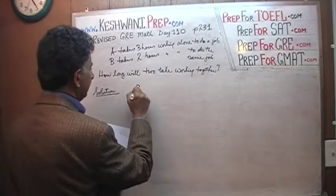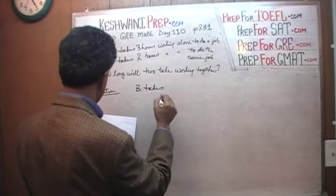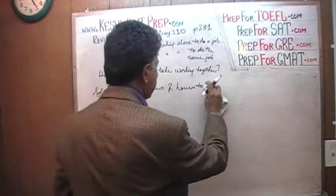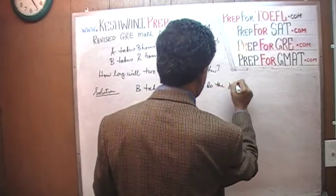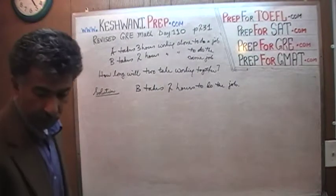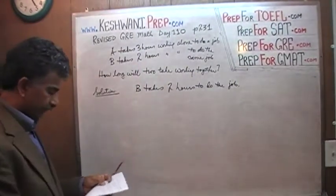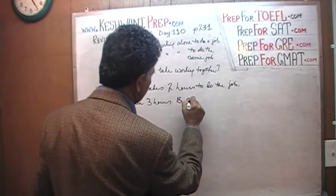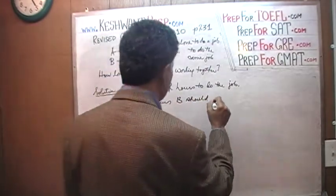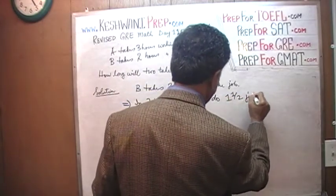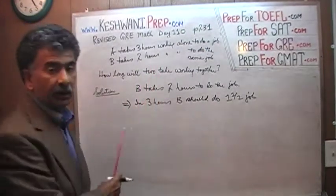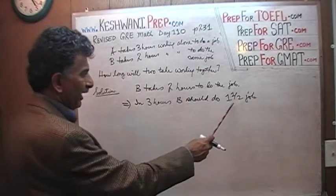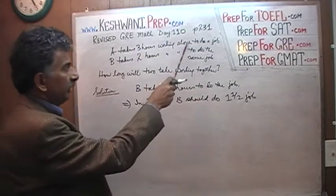We know that B takes two hours to do the job. That implies that in three hours, B should do one and a half jobs. Because it takes two hours to do a job, in another one hour it can do another half a job — whatever the assignment is, it can do one and a half jobs in three hours.